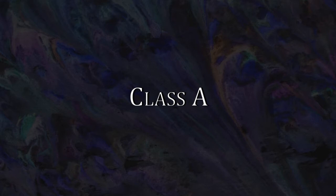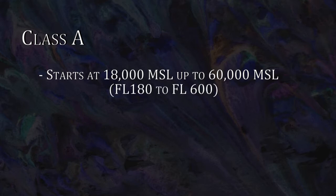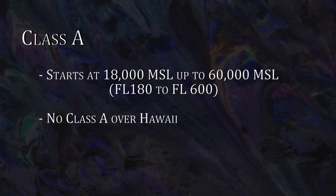Our last airspace is Class Alpha airspace, and believe it or not, this is probably one of the easiest ones to remember. Class Alpha airspace goes from 18,000 feet up to 60,000 feet. Above 18,000 feet we call altitudes flight levels, so 18,000 is actually Flight Level 180. The dimensions are from Flight Level 180 to Flight Level 600 — you drop the last two zeros. Class Alpha exists everywhere over the contiguous United States and over Alaska, but there is no Class Alpha airspace over Hawaii.